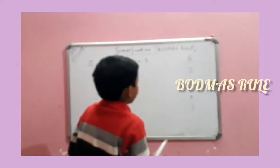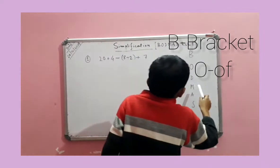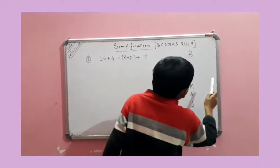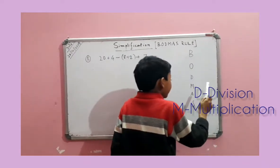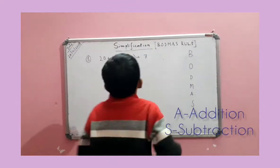B is for bracket, O is for off, D is for division, M is for multiply, A is for addition and S is for subtraction.